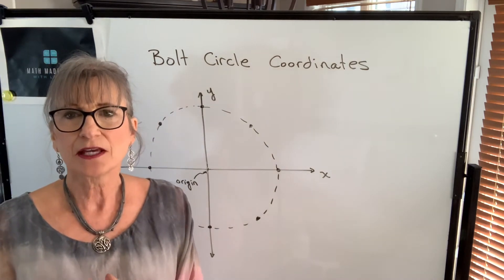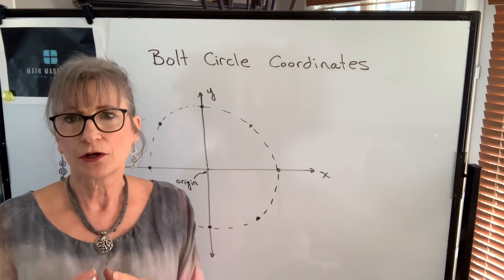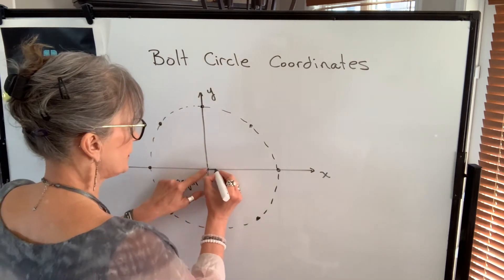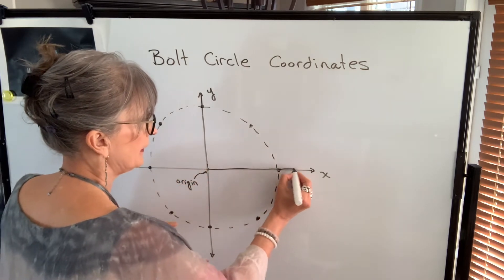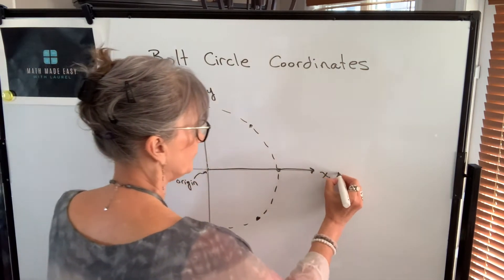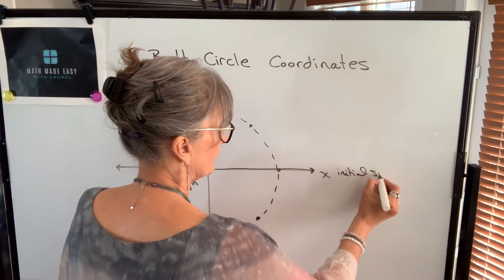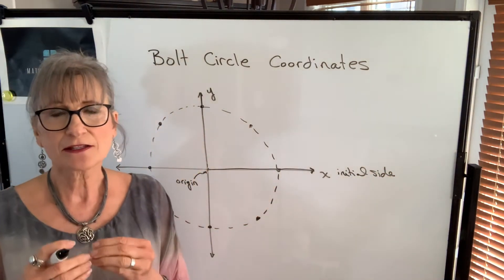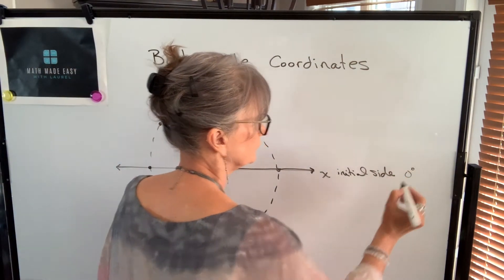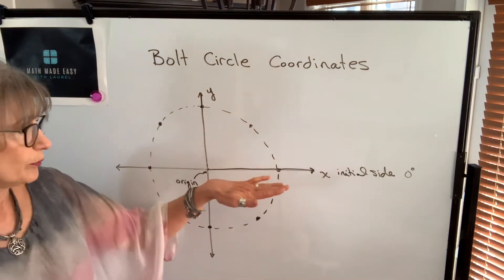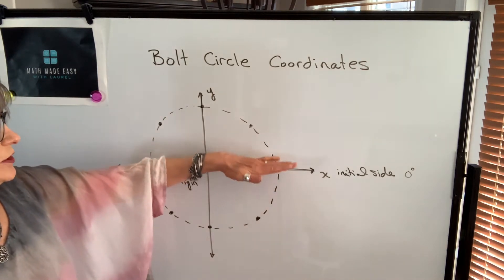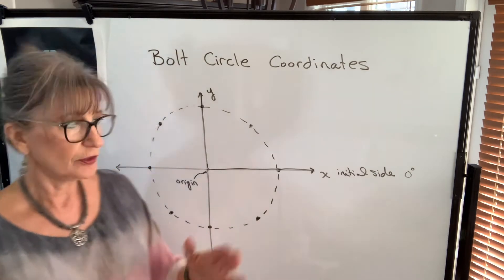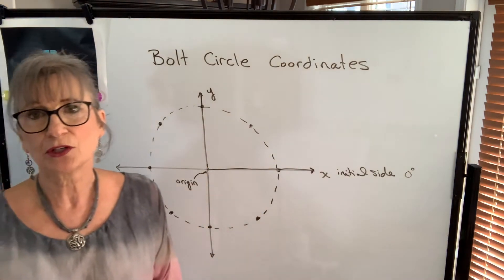We're going to be dealing with angles, and we always start with our angles in standard position. Standard position means that the initial side of the angle will be the positive x-axis — in terms of a clock, it's like three o'clock, and that's zero degrees. When we talk about our angle of rotation, we go in a counterclockwise direction, which will be a positive angle. If you go in a clockwise direction, it will be called a negative angle.